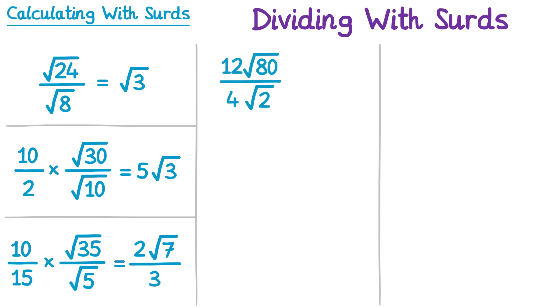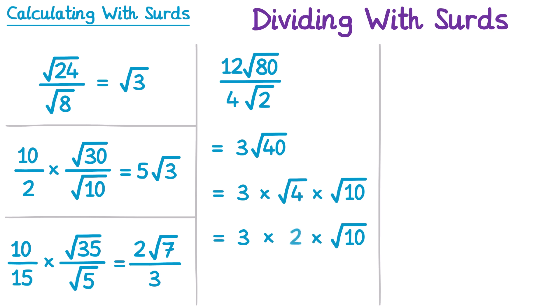Now let's try 12 root 80 divided by 4 root 2. We start with 12 over 4, which gives 3. Then the square root of 80 divided by the square root of 2 is the square root of 40. Remember we should always check if the surd can simplify — and the square root of 40 does indeed simplify. Keeping the 3, we split the square root of 40 into the square root of 4 times the square root of 10. The square root of 4 is 2, so we multiply 3 and 2 to get 6, giving 6 root 10.